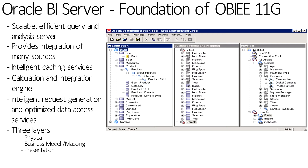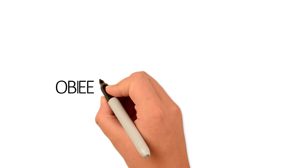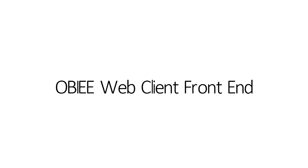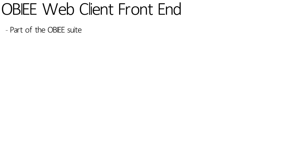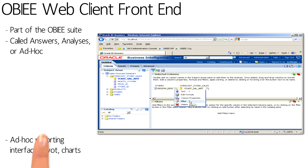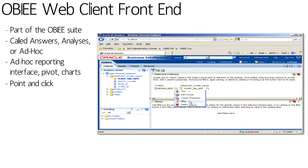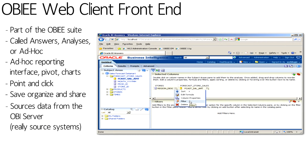The presentation layer provides a clear and clean interface to the end user, categorizing the measures, dimensions, and hierarchies in an easy-to-access intuitive interface. The front-end facing to the end user is the OBIE web client. This interface, known as analyses, provides that ad hoc capability — click-and-drag of columns into the criteria area — allowing the user to then set filters, apply column properties, and create calculations.